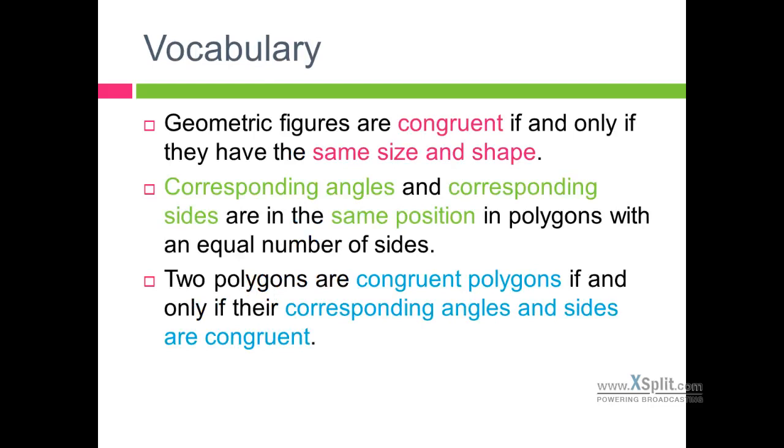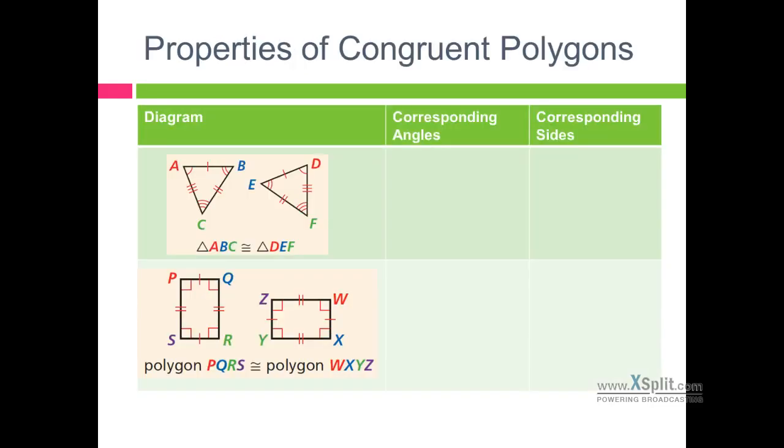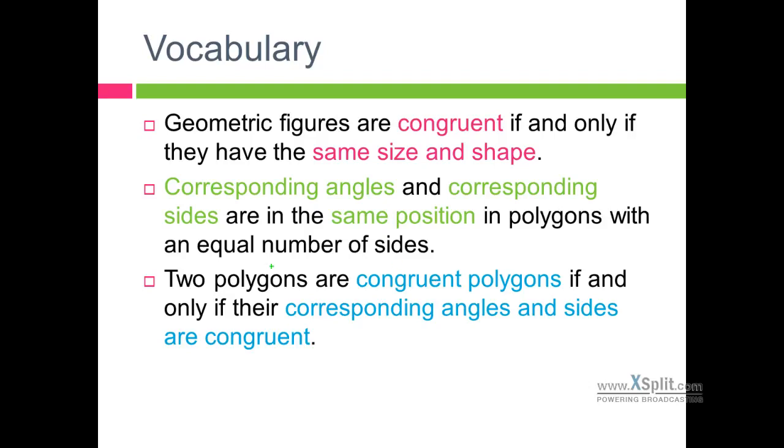A couple things to keep in mind. A shape is only congruent if it has the same size and shape. So if we have a triangle, all of the angles need to be congruent to one another. All of the sides need to be congruent to one another, and in the same order, the same position.